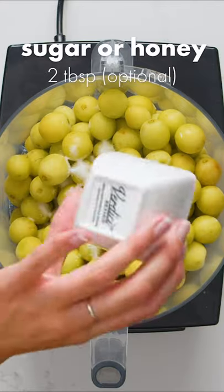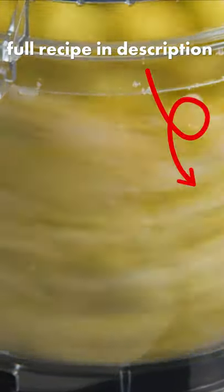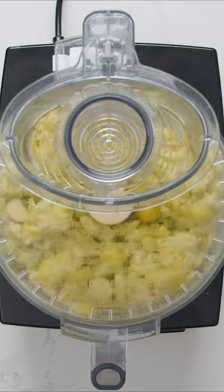Once completely frozen, add the grapes to a food processor or a heavy duty blender then add sugar or honey, lemon zest and lemon juice. The sugar is optional because if the grapes are extra sweet, I found that the sugar isn't necessary.